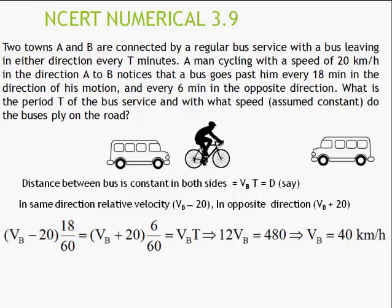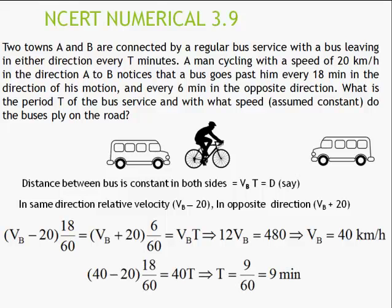Now we find the time period. Using the first equation with V_B = 40 km/h: D = (40 − 20) × 18 = 360 km·min. Then T = D / V_B = 360 / 40 = 9 minutes. We applied the relative velocity concept — how far the bus travels — and used the fact that the distance between buses always remains constant. This was the core concept for this particular question.